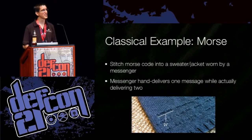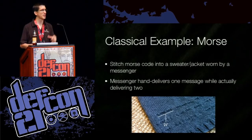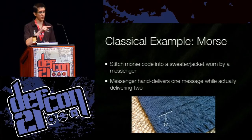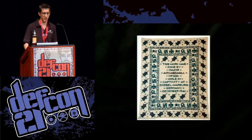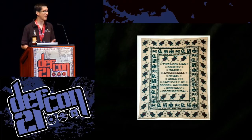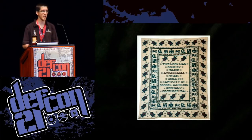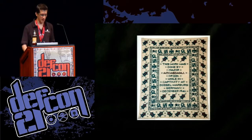Another example of classical steganography is using Morse code. Some people would stitch longer and shorter stitches on a jacket, sweater, or shirt that would conceal a message on the person. The messenger would hand-deliver one note, but as the recipient took the note, they would read the sweater and learn the second message — the true intention of the visit. Here's an example of a tapestry stitched by a prisoner of war in 1941. You can see two borders with dots and dashes — that was Morse code. If you're interested in what the message says, you can grab the talk online and decode it yourself.